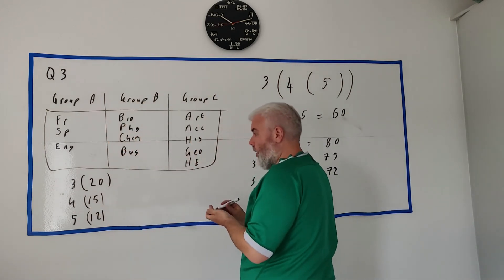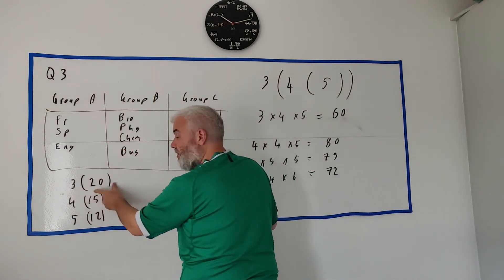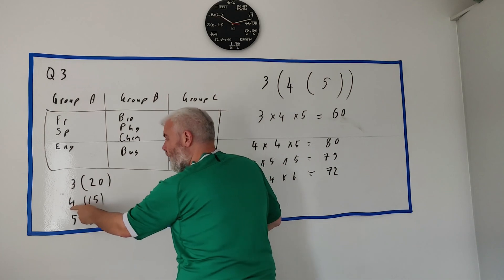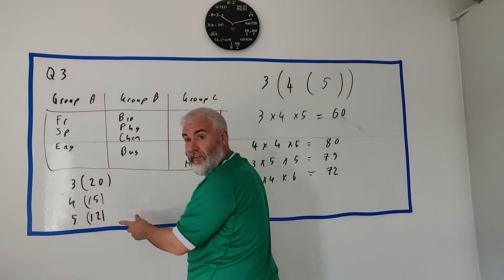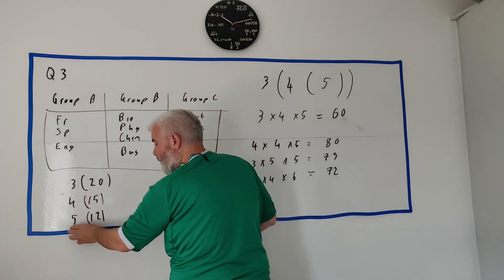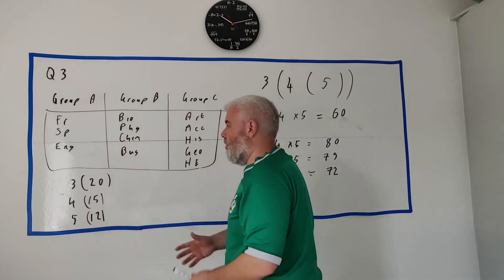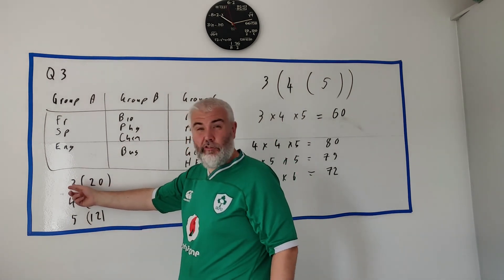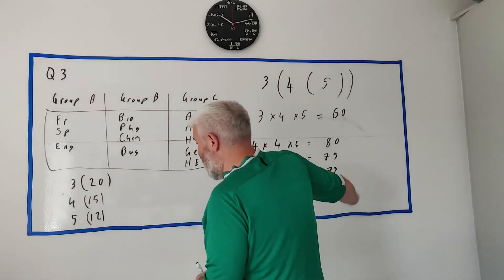So adding a number to the three would give us an extra 20. Adding a number to the four would give us an extra 15. Adding a number to the five would give us an extra 12. So adding the number to the three group is the best - it's the same thing we found here.